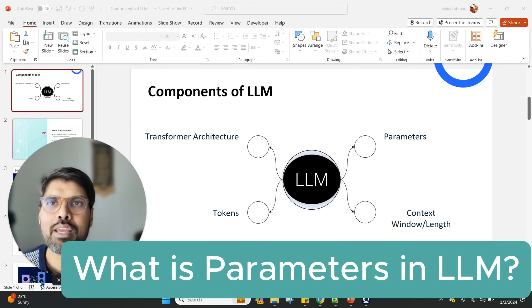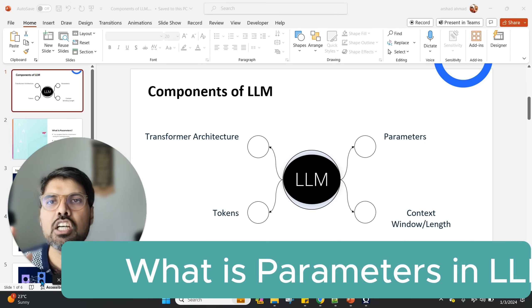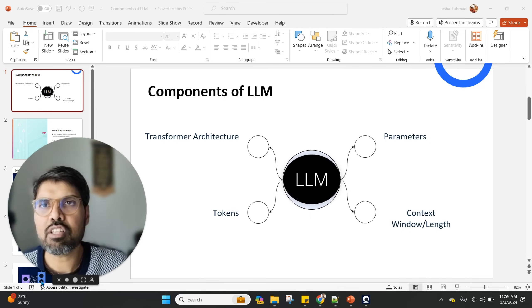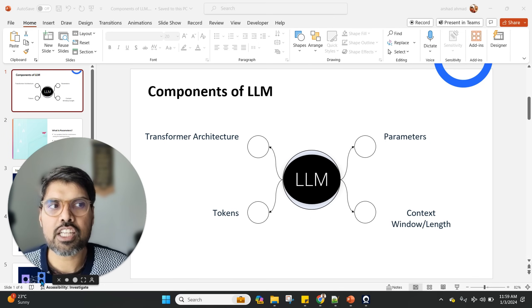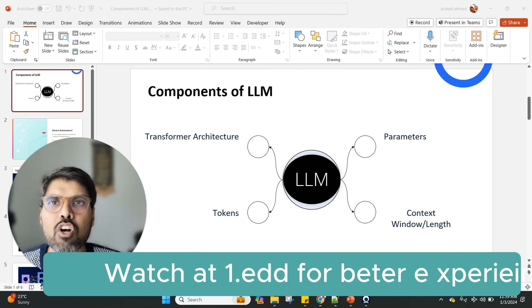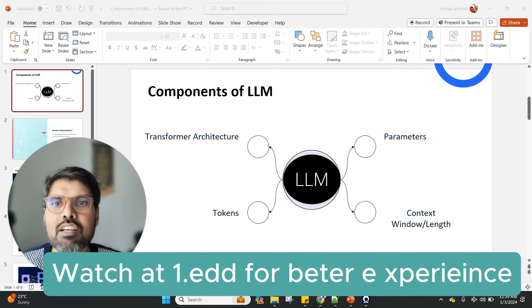Good morning everyone. There are four main components for a large language model: the transformer architecture, the tokens, the parameters, and the context window length. When we talk about large language models, we almost always refer to the size of the model.